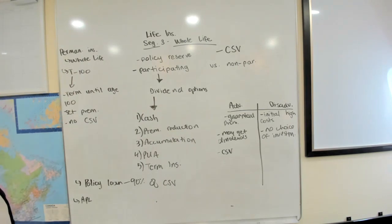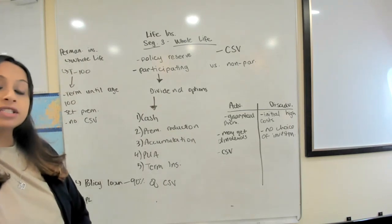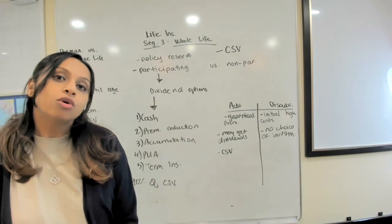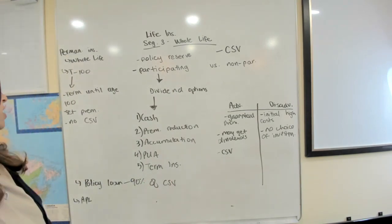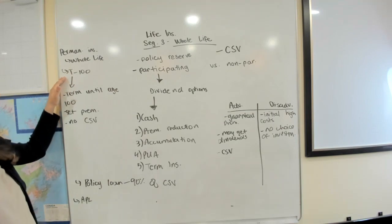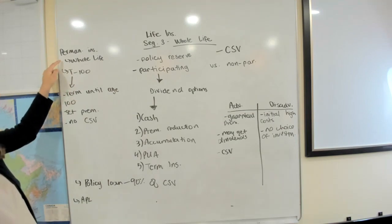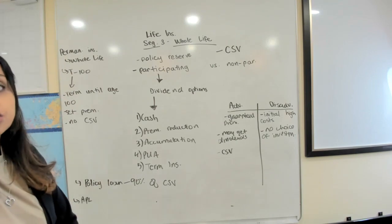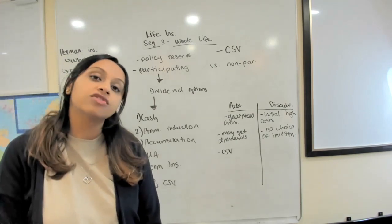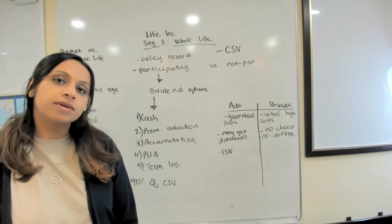For whole life, when we're looking at permanent insurance there's another product which I will also mention briefly that's considered permanent insurance and that's called T100. So there's two that we're looking at here: one is whole life and one is T100. T stands for term and 100 stands for the age.